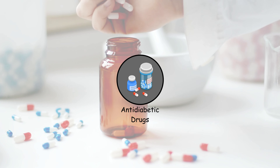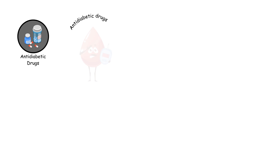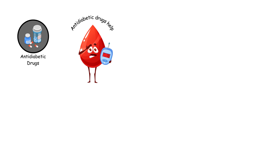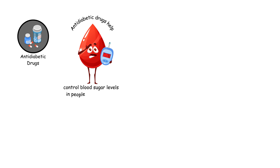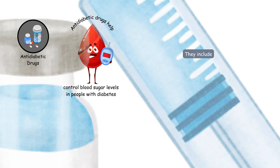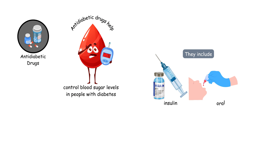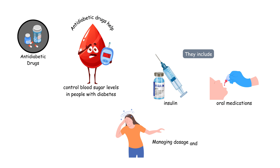Antidiabetic drugs help control blood sugar levels in people with diabetes. They include insulin and oral medications. Managing dosage and diet is crucial to avoid hypoglycemia.